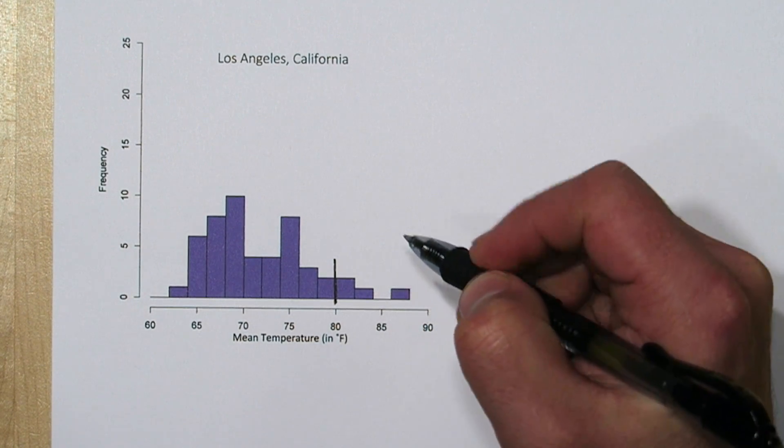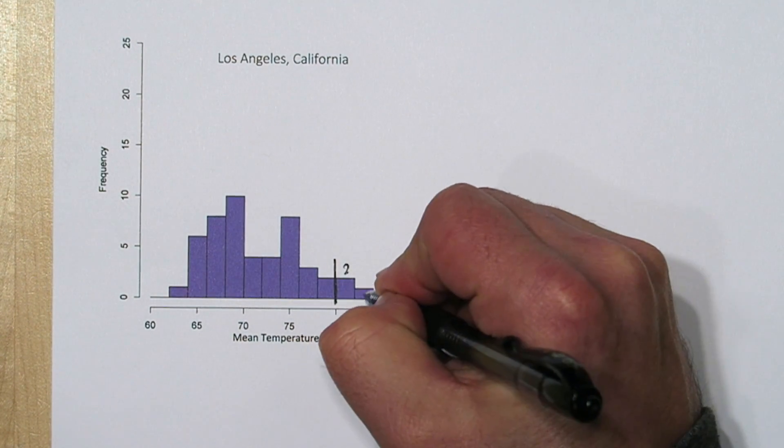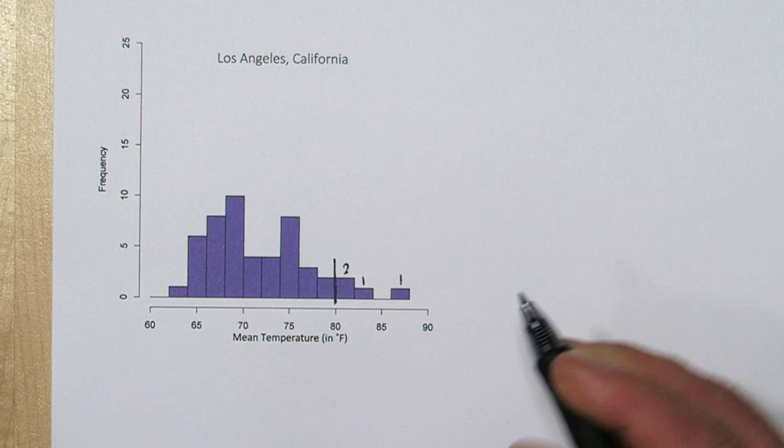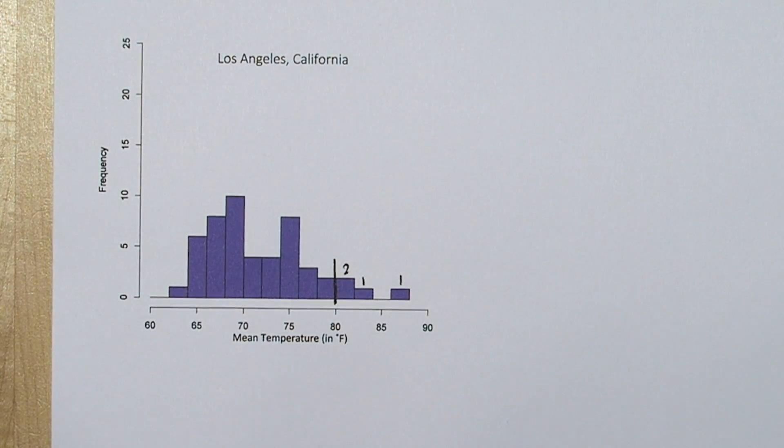It looks like we have a 2, 1, and another 1. So a total of 4 of the 50 days were greater than 80 degrees. That leaves 46 to be less than 80 degrees.